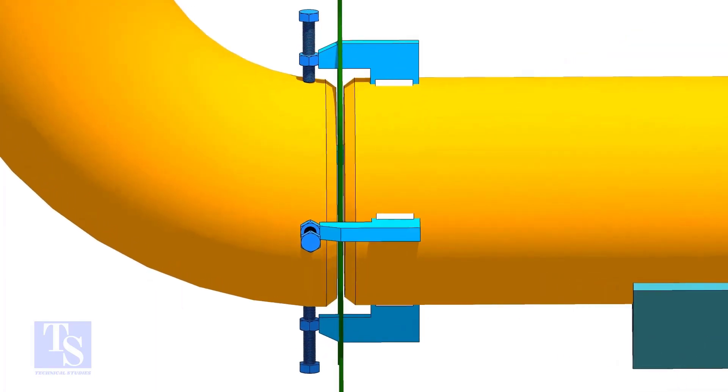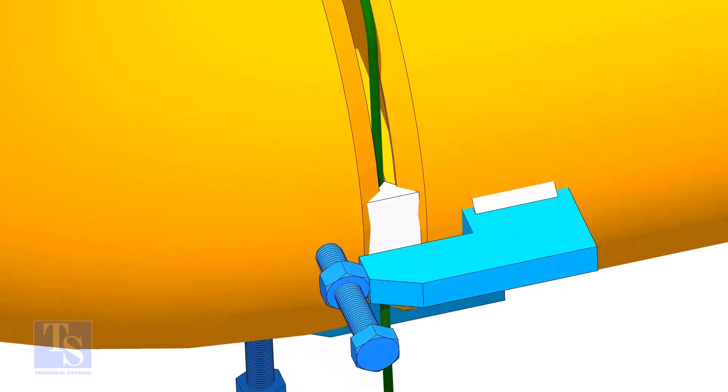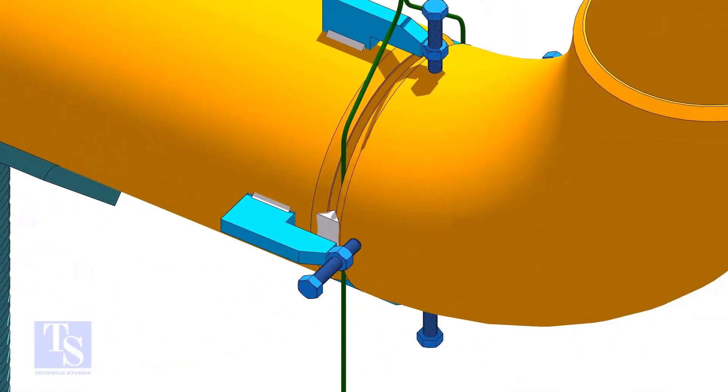Next method is aligning the elbow and the pipe with two right angles. After tacking at both sides of the joint, hold a right angle on the elbow face and one on the pipe as shown.